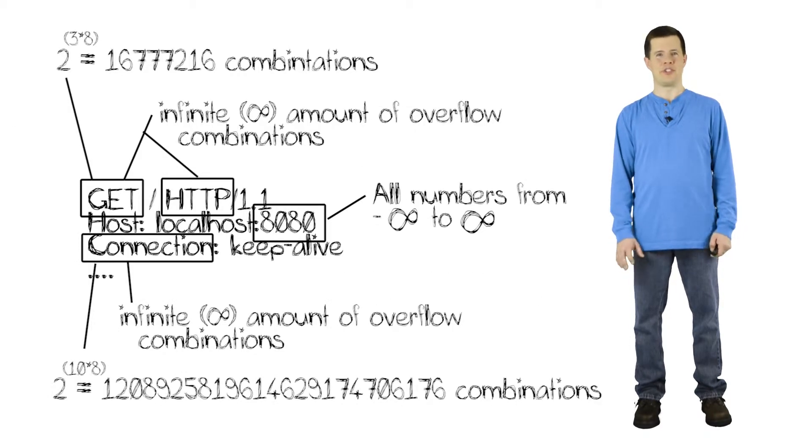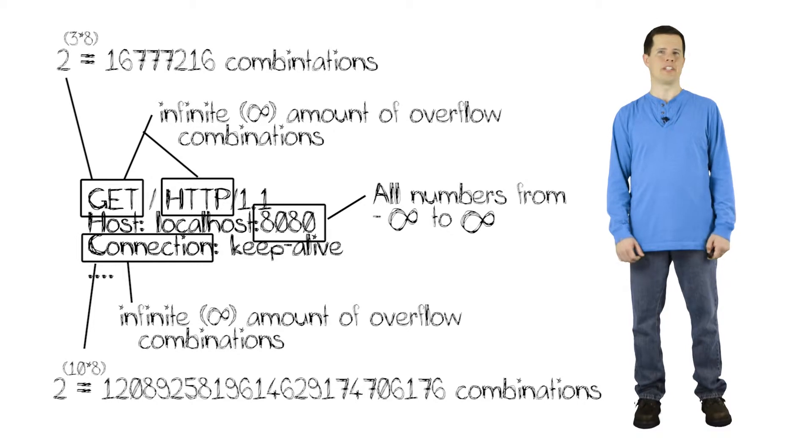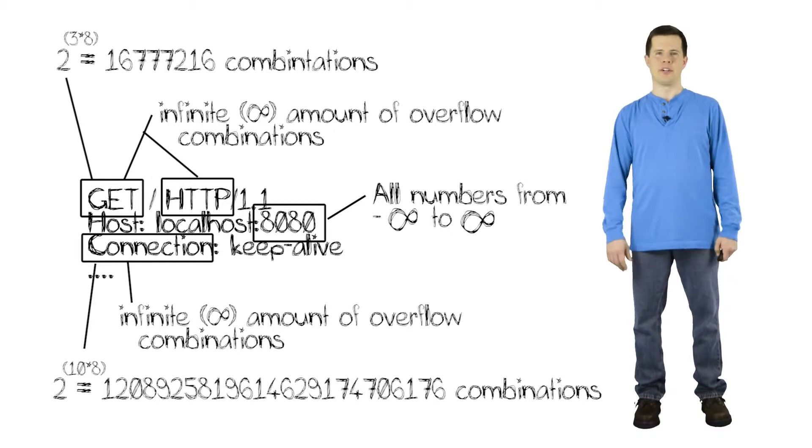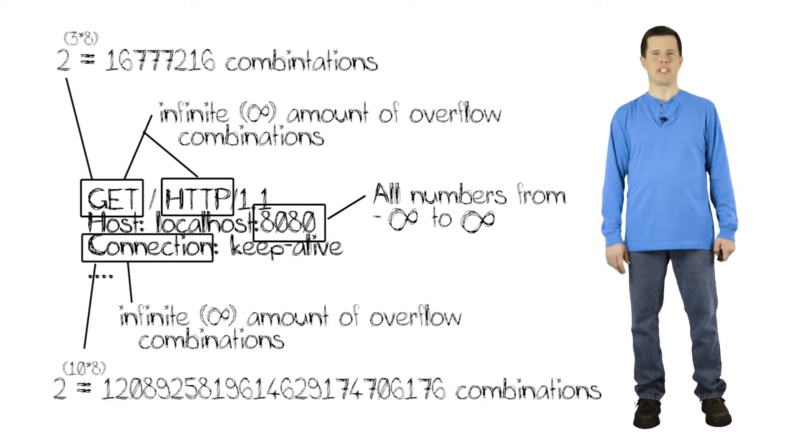So the fundamental challenge of fuzzing is that it's an infinite space problem. For any piece of target software, you can generate an infinite number of bad inputs. And of course, nobody's got infinite time to do their testing.